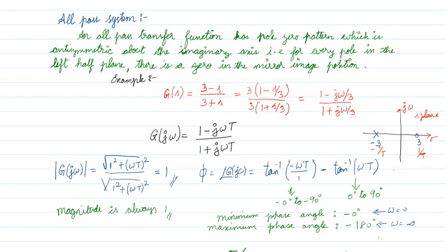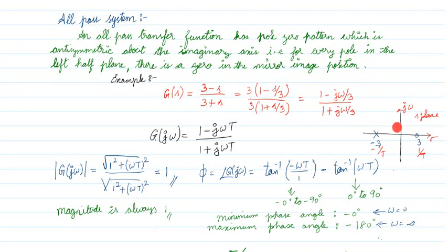Take the transfer function (3 - s)/(s + 3). What is the zero? Equating the numerator to zero, I get s = 3. So there is a zero at 3. Where is the pole? Equating the denominator s + 3 = 0, I get s = -3. So there is a zero at 3 and the pole at -3. The pole-zero pattern is anti-symmetric about the imaginary axis — on one side I have the pole, and equally on the other side I have the zero.